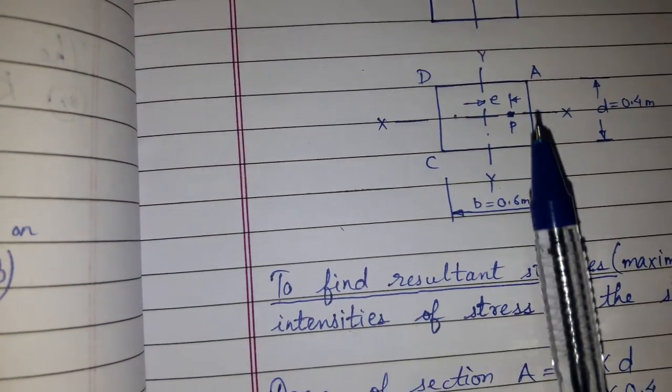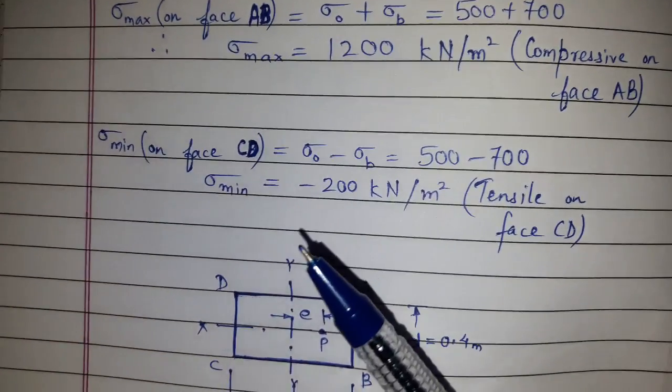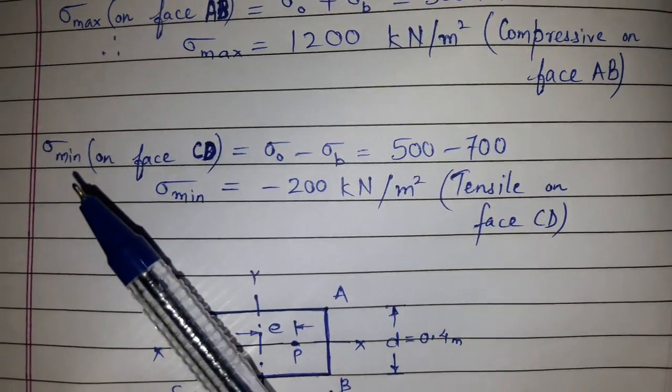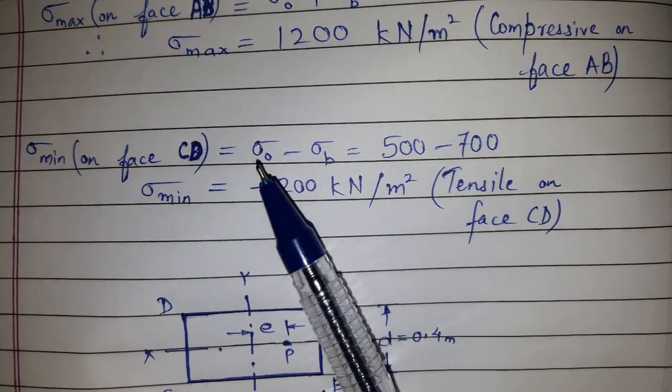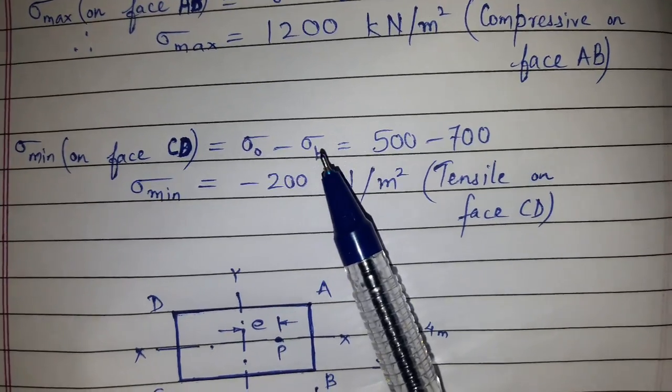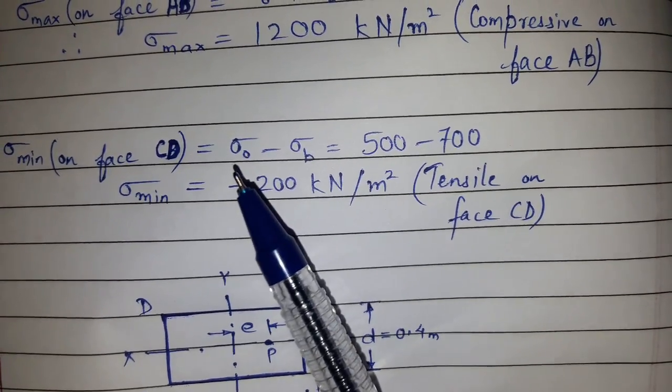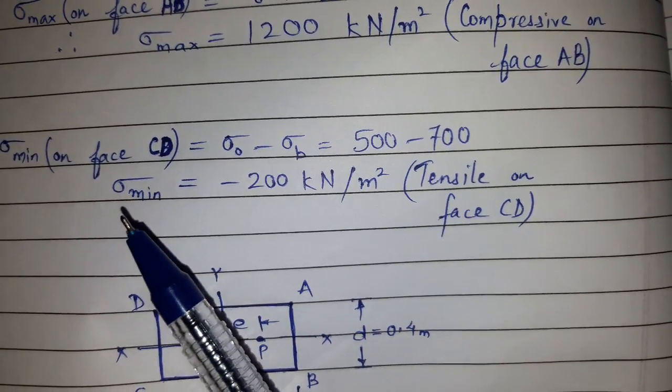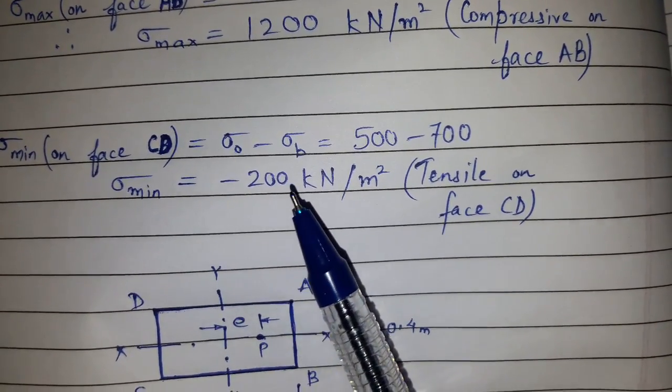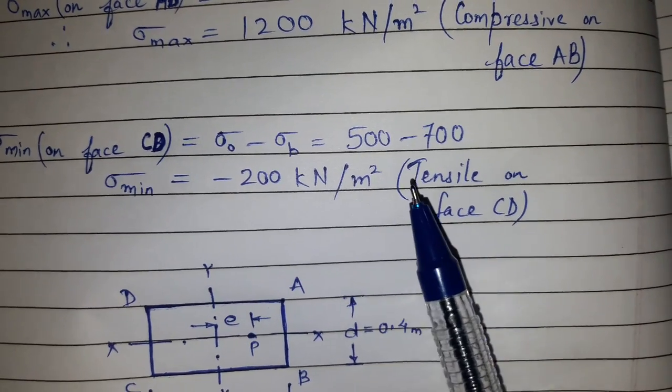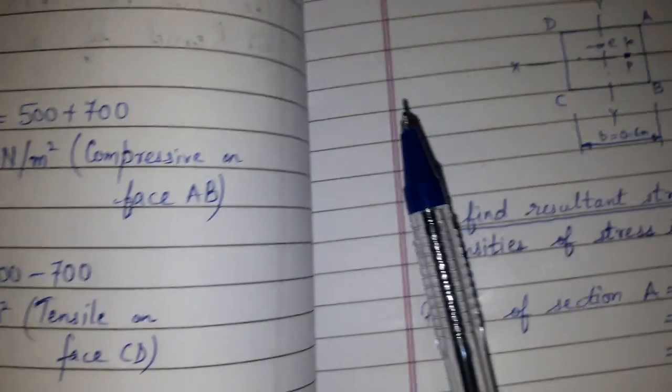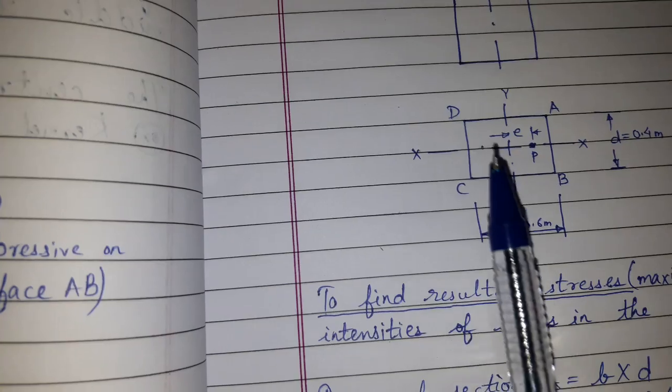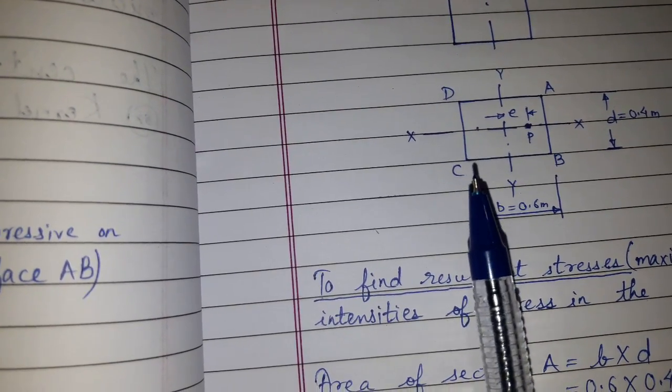So here it will be compressive. Let's see on face CD. Sigma minimum on face CD is equal to sigma naught minus sigma B, that is direct stress minus bending stress. 500 minus 700, we got sigma minimum equals minus 200 kN per meter square. We have tensile on face CD. We have compression here and tensile on face CD.